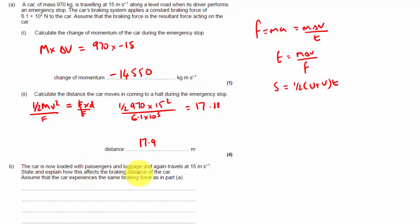Right. The car is now loaded with passengers and luggage, and again travels at 15 metres per second. State and explain how this affects the braking distance of the car. Assume the car experiences the same braking force as in part A.